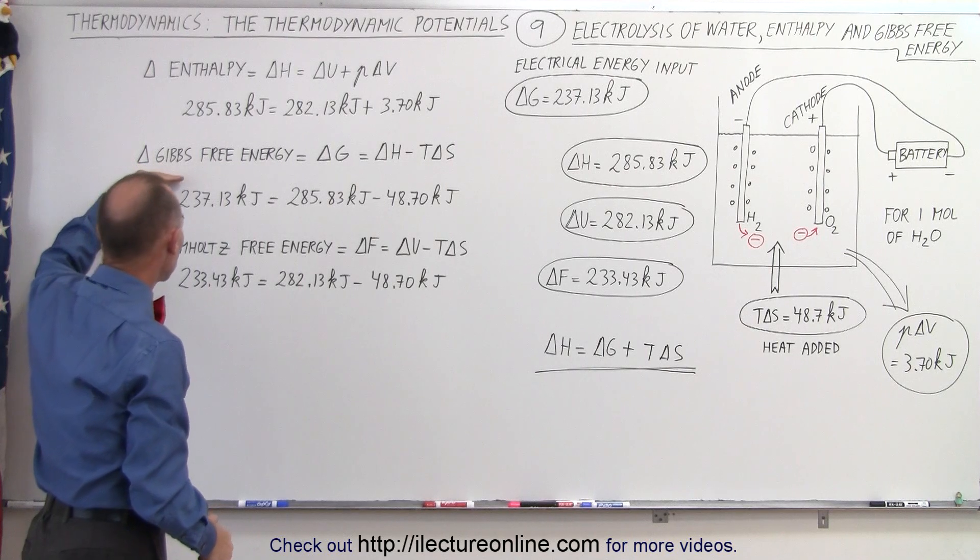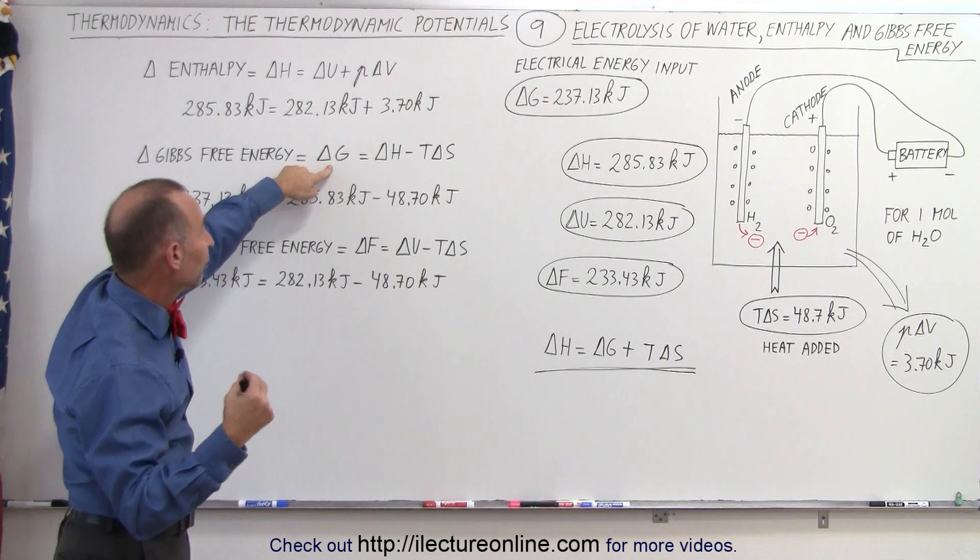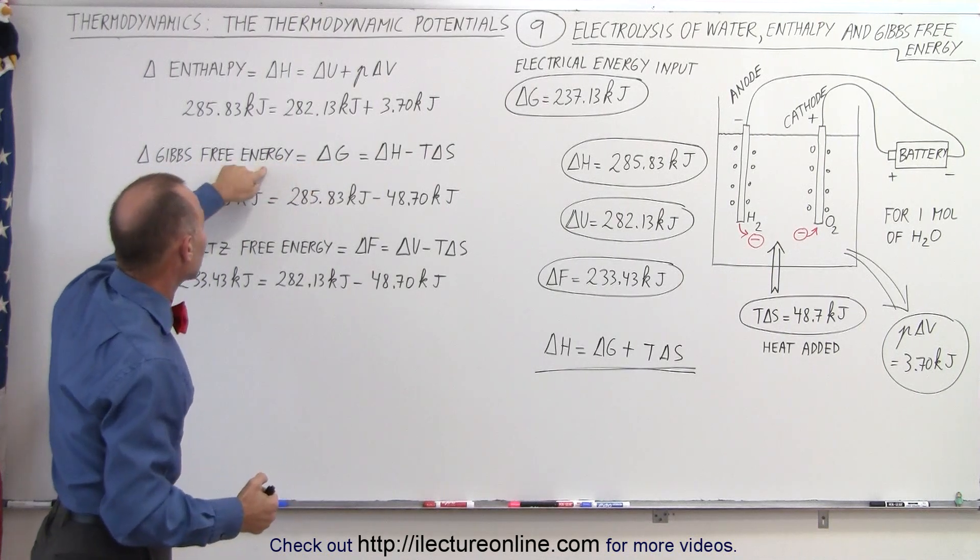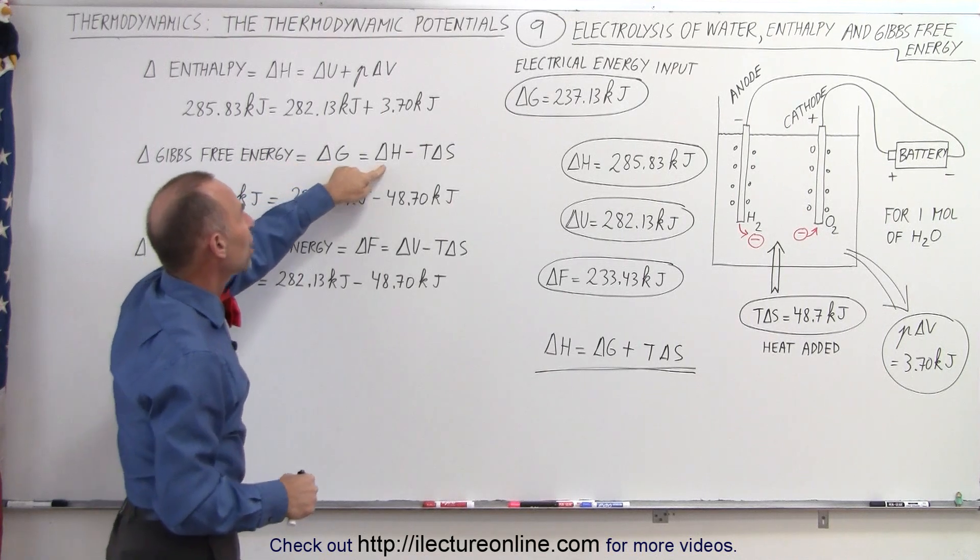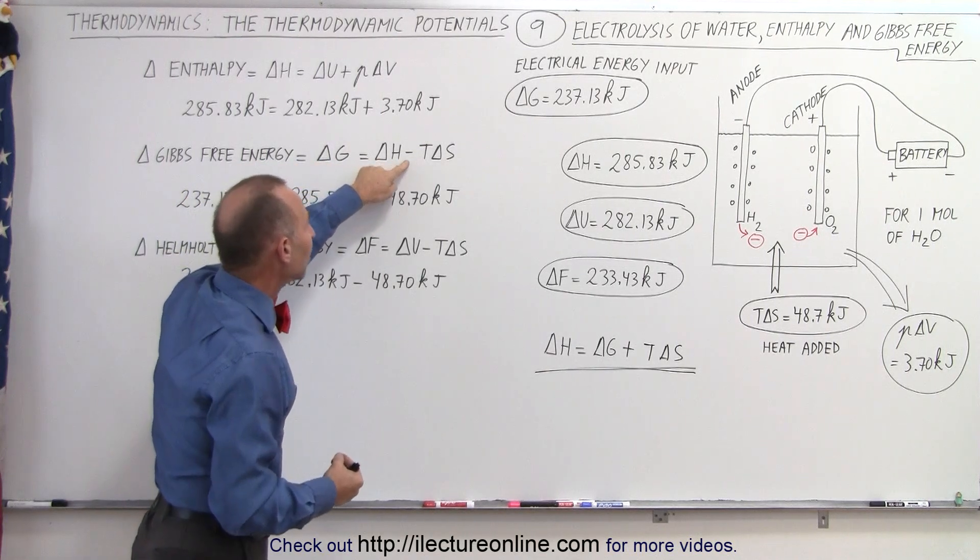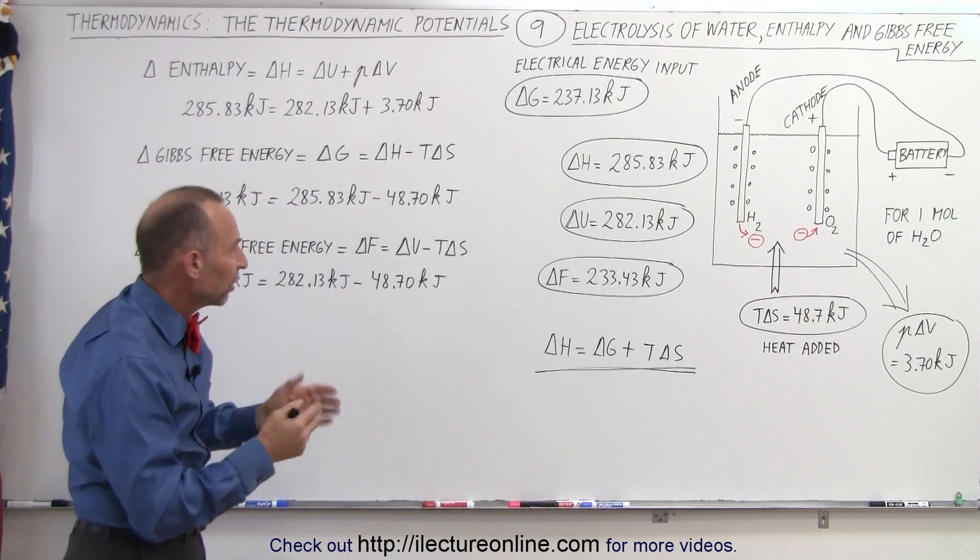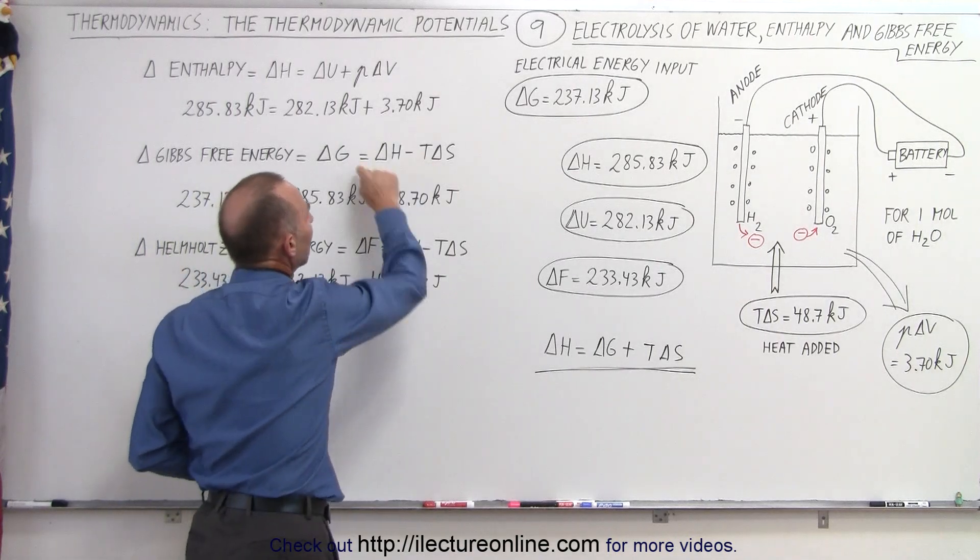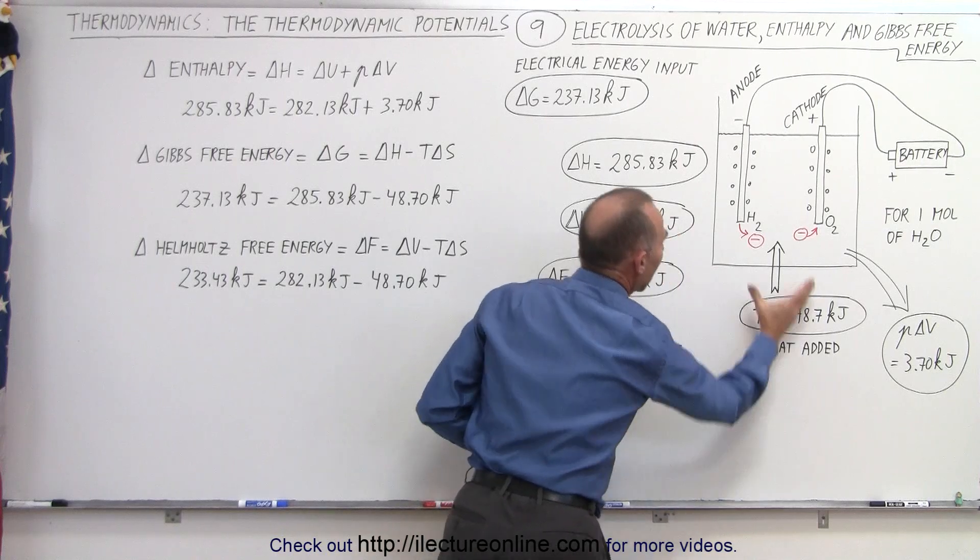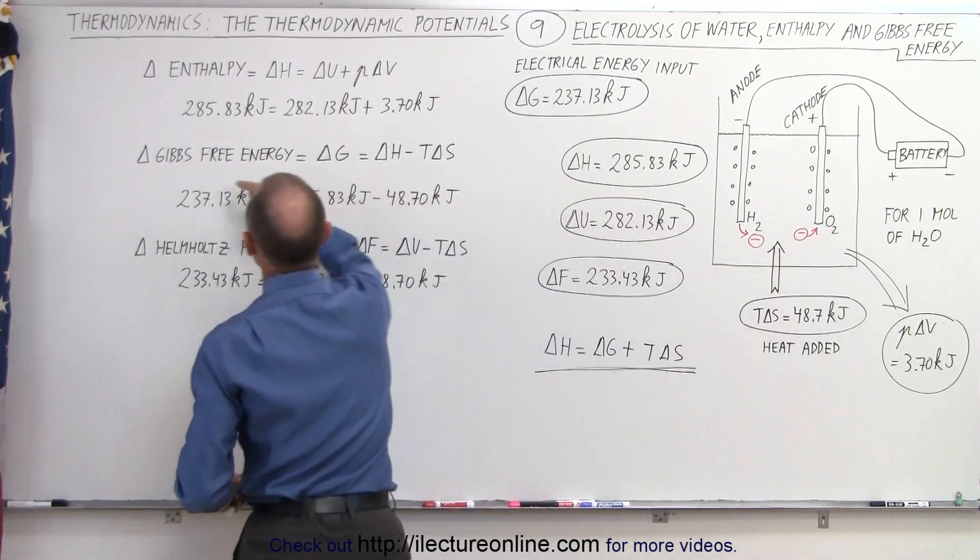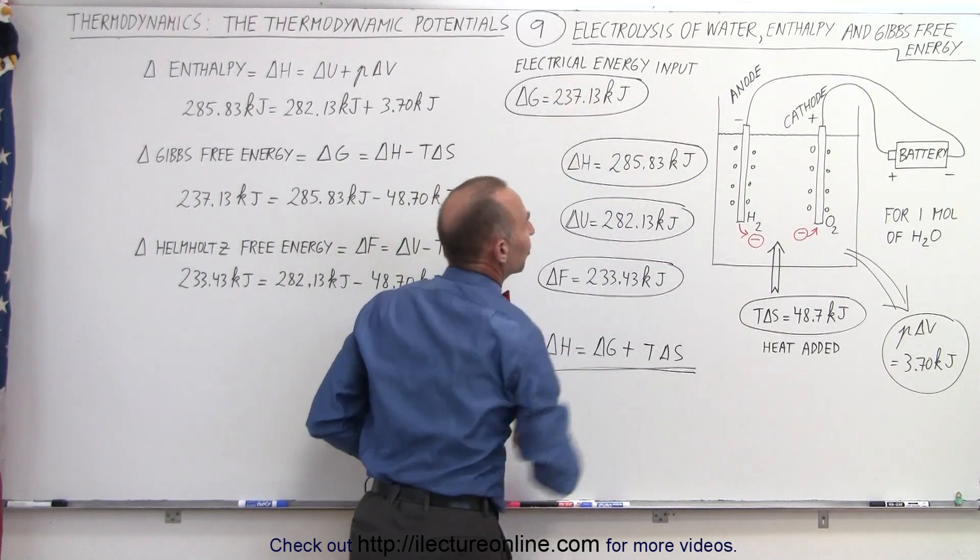Next we want to look at the change in the Gibbs free energy, delta G. G is the unit or the variable we use to indicate Gibbs free energy. And is defined by the change in enthalpy minus the T delta S term. Remember, delta S has to do with the change in entropy. We'll explain that later. So we take delta H, which is right here, and subtract from that the T delta S, which is the heat added. And that gives us what we call the Gibbs free energy, which is essentially in this example, the electrical energy input to the system.